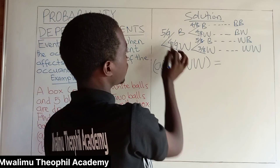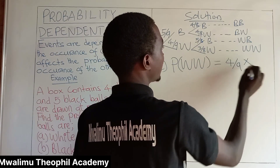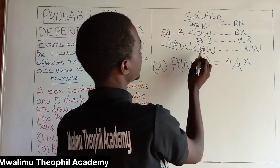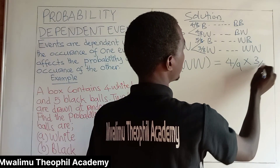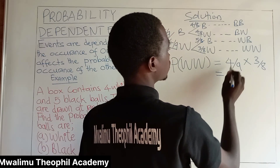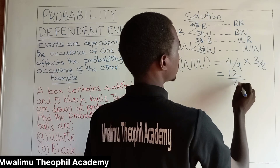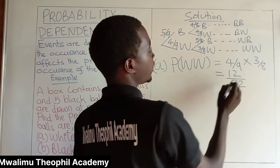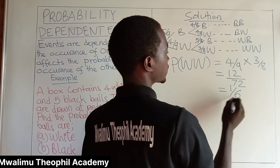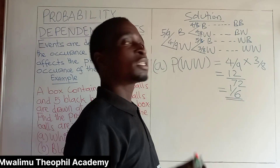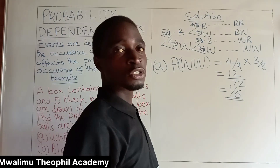The first white is four over nine, and the second white is three over eight. This would be equal to four times three, which is twelve, out of seventy-two. If we simplify, it brings one over six. One over six is the probability of drawing both two balls white.